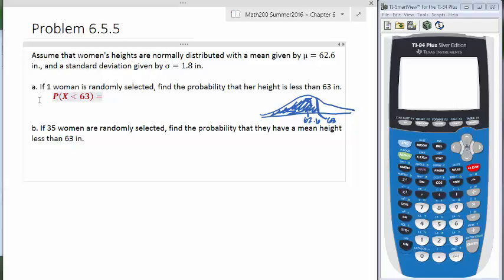So our calculator command is using normal CDF. And then if you remember, the normal CDF takes in four arguments, the low, the high, the mean, and standard deviation. So the low goes all the way up to negative infinity. So we'll call that a negative 1e to the 99. The high ends up at 63. The mean is 62.6. And then standard deviation is 1.8.